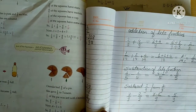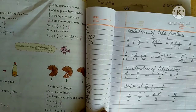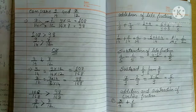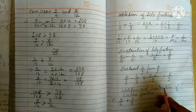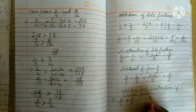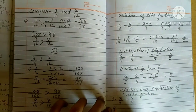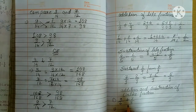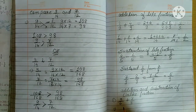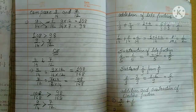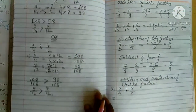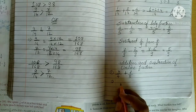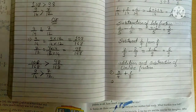This is how we do like fractions. Now, unlike fractions के लिए addition and subtraction कैसे होगी? For unlike fractions, we first convert them into like fractions, and then we add.